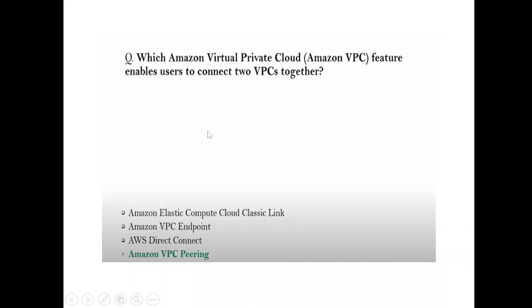Question: Which Amazon VPC feature enables users to connect two VPCs together? Connecting two VPCs means peering. Answer: Amazon VPC Peering.